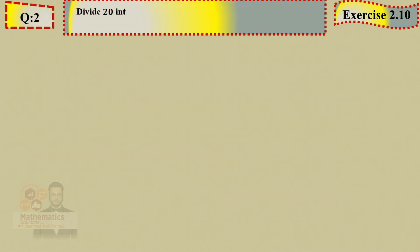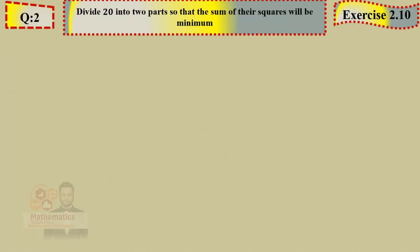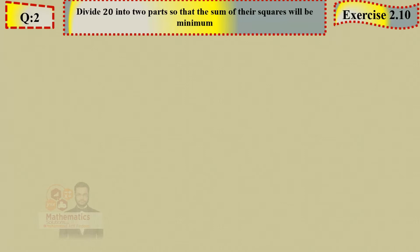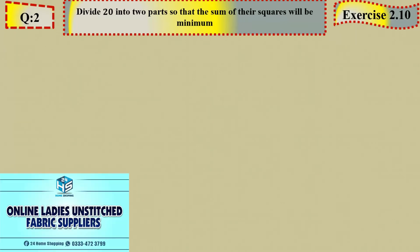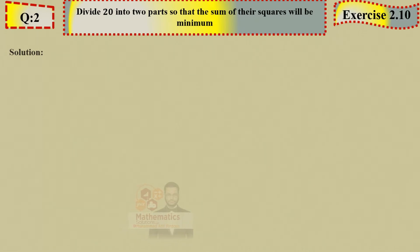Next, Question Number 2. Again decode it as a mathematical equation. Divide 20 into two parts so that the sum of their squares will be minimum. Divide 20 — like the dollar example: if you have 20 dollars and give some to one person, the other gets the rest.